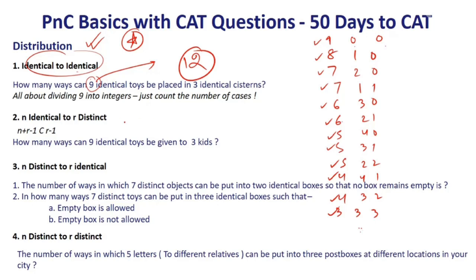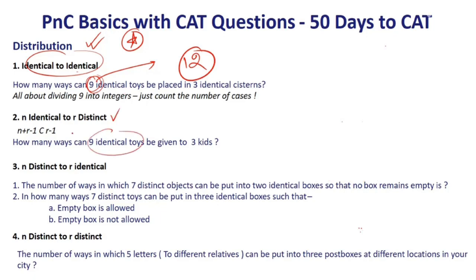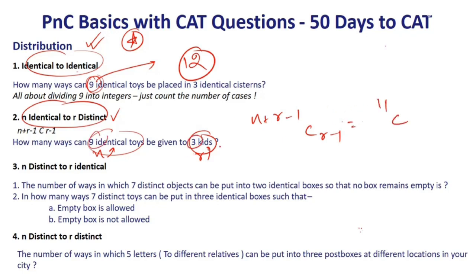Identical to distinct: 9 identical toys to be given to 3 distinct kids. The formula is (n + r − 1)C(r − 1), where n = 9 and r = 3. That becomes 11C2 = 11 × 10 / (2 × 1) = 55 ways. We've covered this case in greater detail in a separate video.